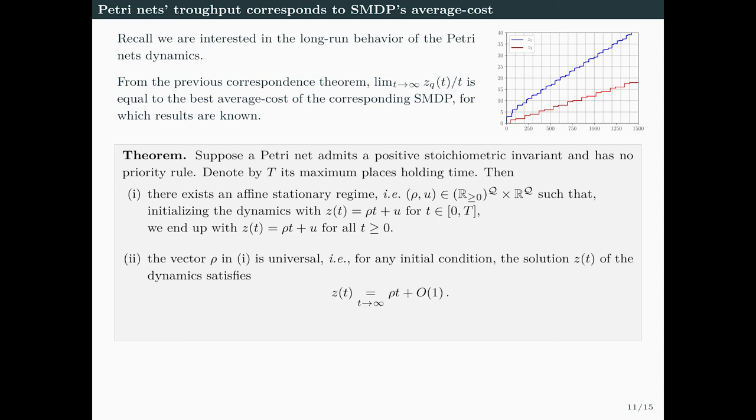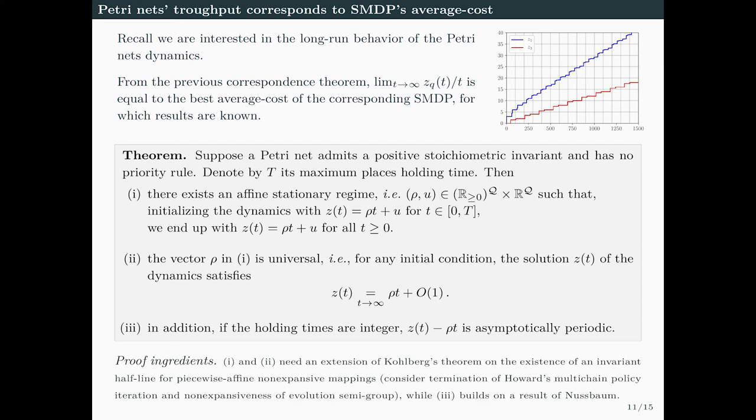More interestingly, this vector ρ is universal, meaning for any initial condition, the solution Z(t) asymptotically tends to ρt up to a constant term. Finally, if holding times are integer, the deviation Z(t) - ρt converges to periodic orbits. The first two points can be seen as an extension of Kohlberg's theorem on the existence of invariant half-lines for piecewise defined non-expansive mappings. We constructively obtain an affine stationary regime from the termination of Howard's multi-chain policy iteration algorithm proved by Dynardo and Fox, and address the infinite dimensionality using the non-expansiveness of an evolution semigroup. The asymptotic periodicity follows from Nussbaum's result.